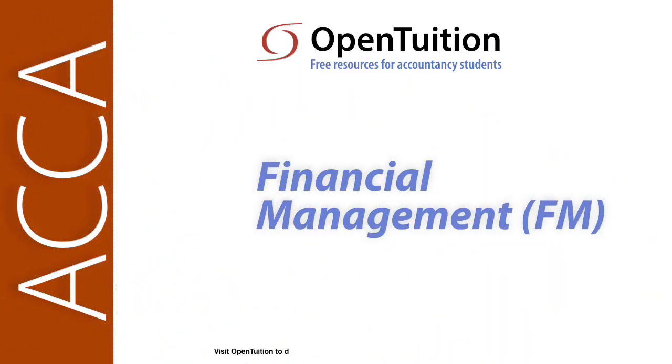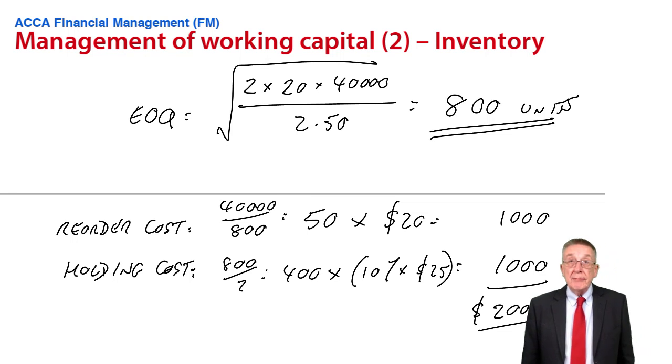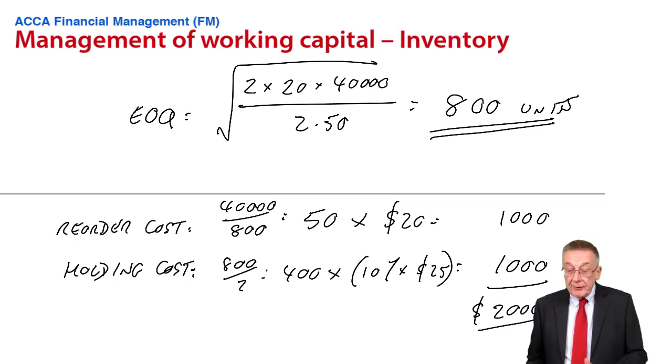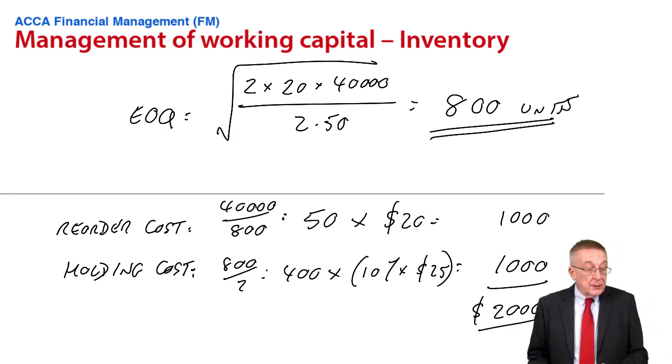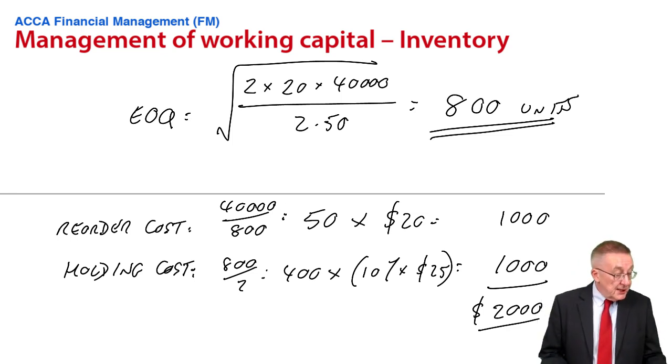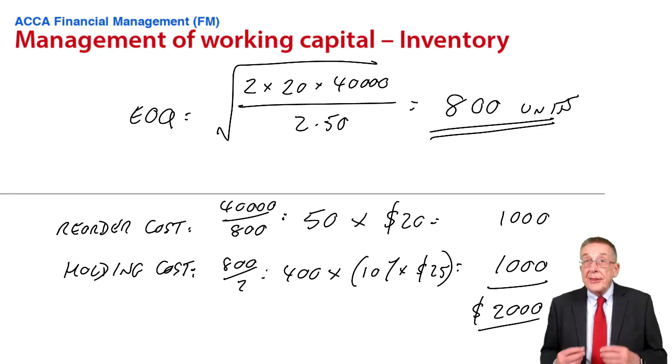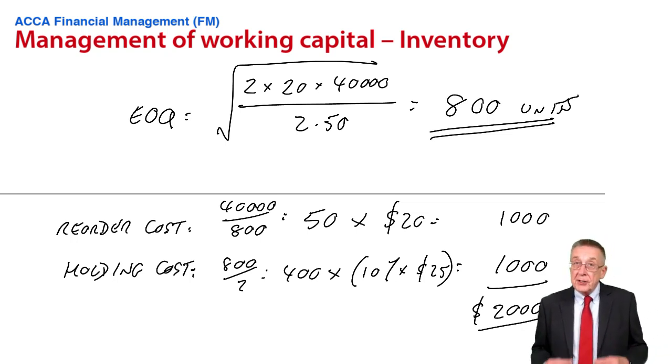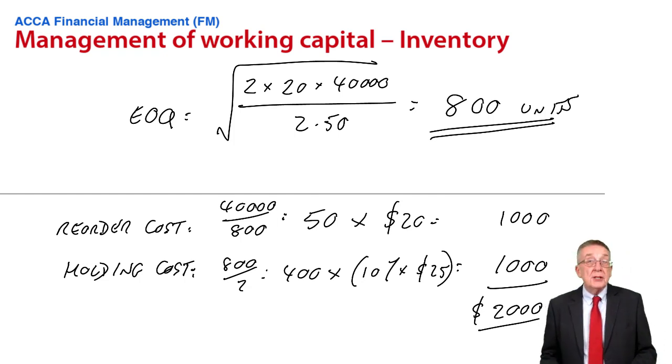This is a lecture from Open Tuition. To benefit from the lecture, you should download the free lecture notes from opentuition.com. This is the second lecture on chapter four of the free lecture notes. We've looked at the economic order quantity and we found out in the last lecture, in example two, that the economic order quantity was 800 units.